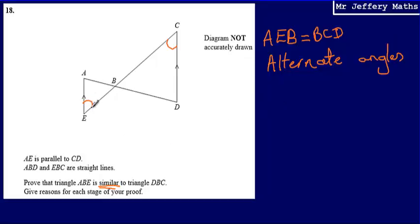Then, because those are alternate angles, and because we've just said that they're parallel lines, we can also say that angle EAB and angle BDC are alternate as well, and therefore they will be the same. So angle EAB is equal to BDC, and the reason is that they are alternate angles.